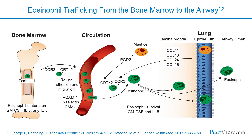Eosinophils can be recruited to the lungs under certain conditions. They may be found in the airways, tissues, and circulation of patients with COPD, both during stable disease and exacerbations. These immune cells are associated with the risk of COPD exacerbations, mortality, and decline in FEV1. They are also associated with response to both inhaled and systemic corticosteroids.